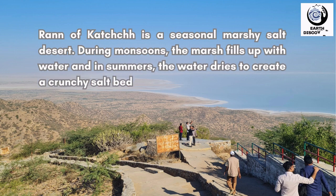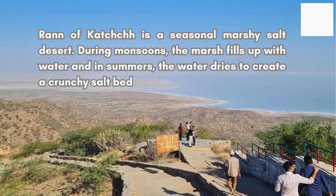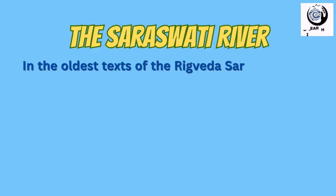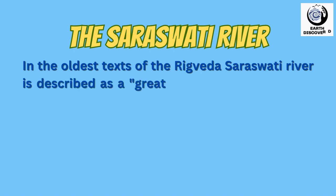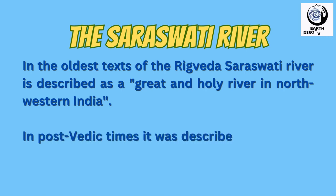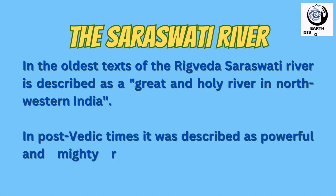During monsoons, the marsh fills up with water, and in summers, the water dries to create a crunchy salt bed. In the oldest texts of the Rigveda, Saraswati river is described as a great and holy river in north-western India. In post-Vedic times, it was described as a powerful and mighty river draining into the Rann of Kutch.